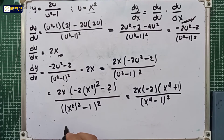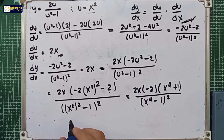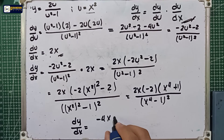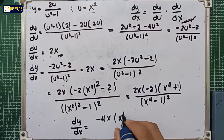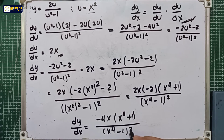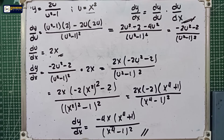The final answer: dy/dx equals 2x times negative 2, which equals negative 4x, multiplied by x to the fourth power plus 1, all over x to the fourth power minus 1 raised to 2. That is the final answer and complete solution for number 6.